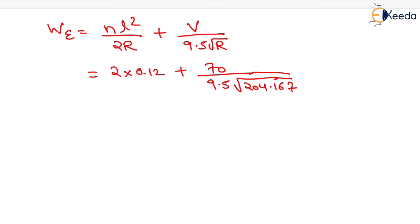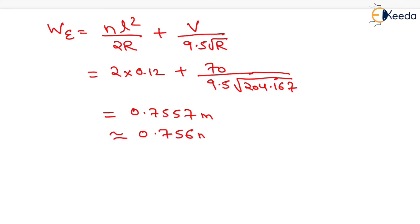On solving this, we get the answer as 0.7557 meter, which approximately equals 0.756 meter. That will be the value of extra widening. That is all about this numerical. Thank you, students.